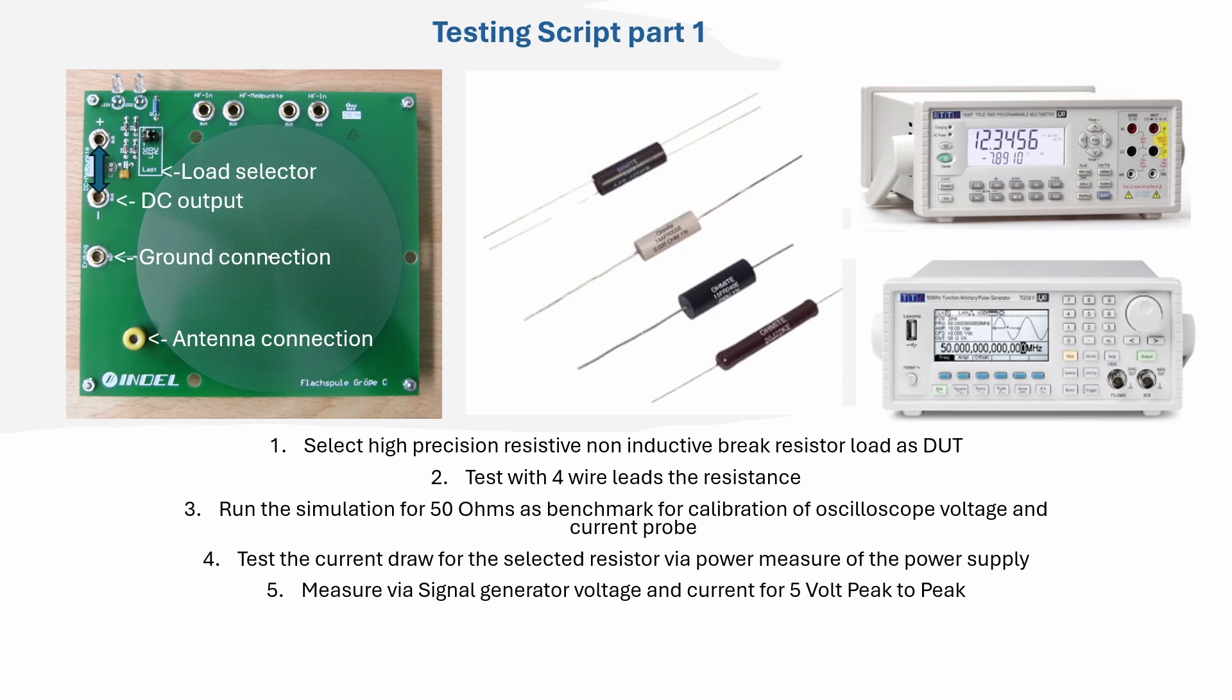I will give you a brief overview of what it means if you measure only with two wires, what normal DMMs do, that you get quite a large amount of error for your measurement. Then we're going to run the simulation for 50 ohms as benchmark for calibration for the oscilloscope voltage and current probe.